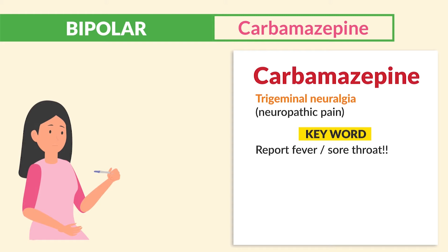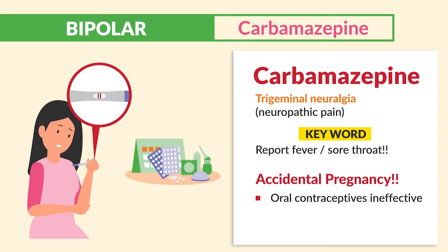Now next is accidental pregnancy. Key words: oral contraceptives are ineffective, and patients will need alternative forms of birth control methods.